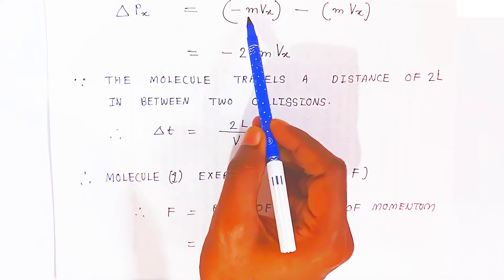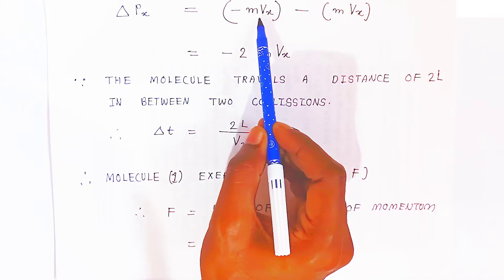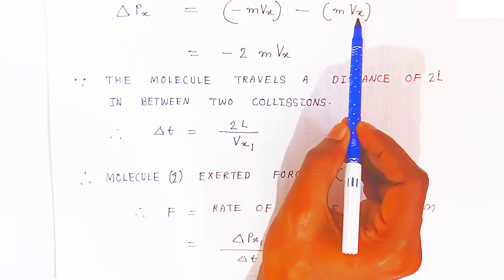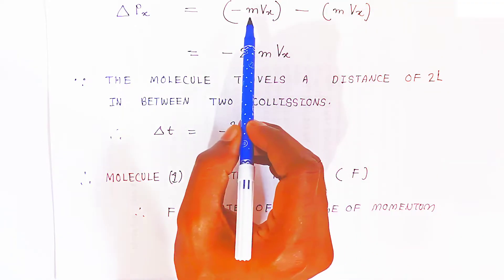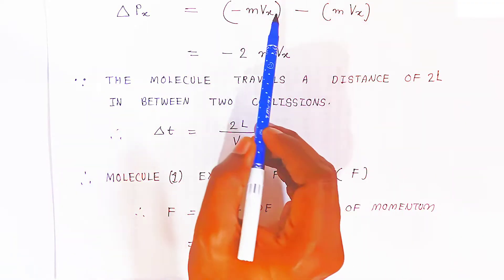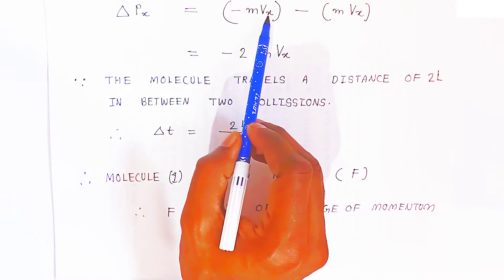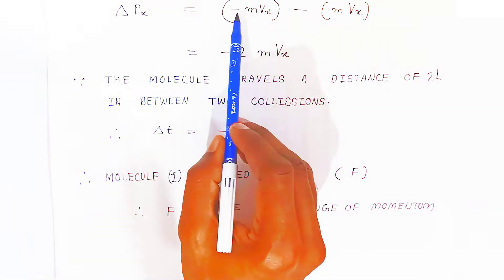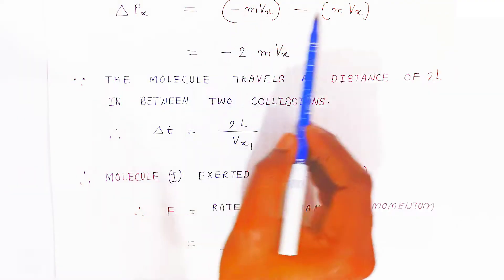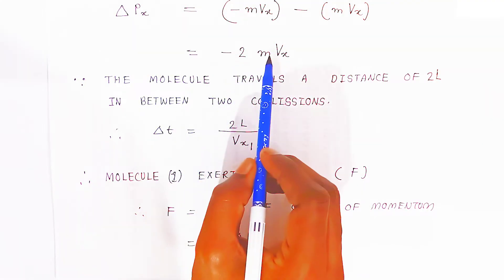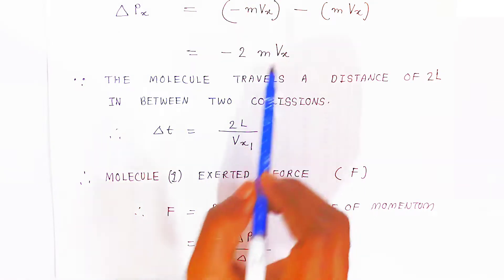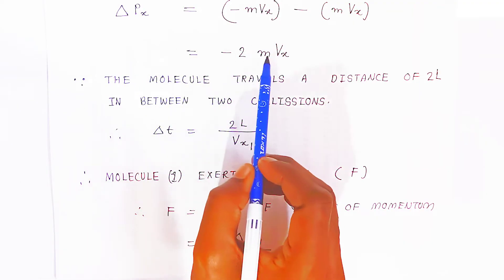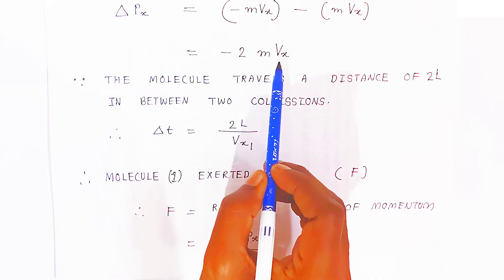Delta px is nothing but minus m·ux — this is the final momentum — minus the initial momentum, mass into velocity. Because the particles are moving along the x-axis, we have taken velocity along the x-axis. Because it is negative, negative multiplied by negative gives minus 2 times mass into velocity along the x-axis. So the change in momentum equals minus 2m·vx.